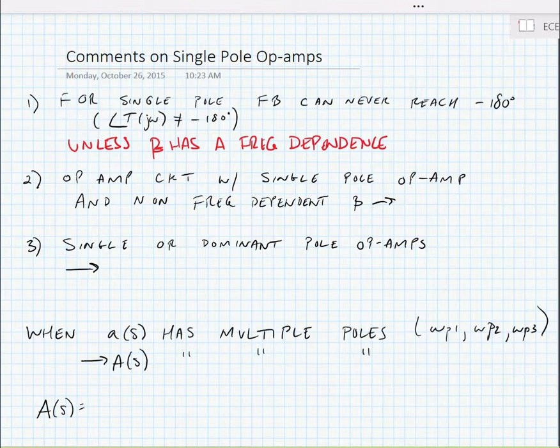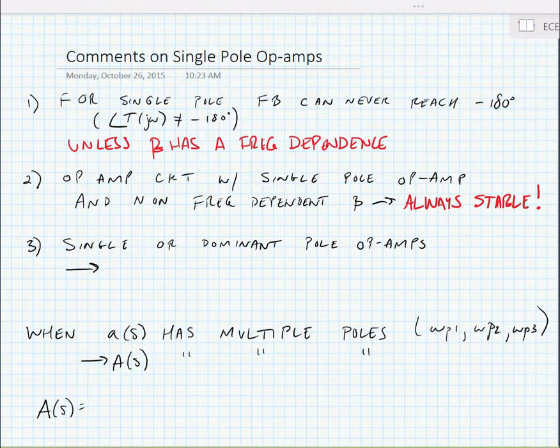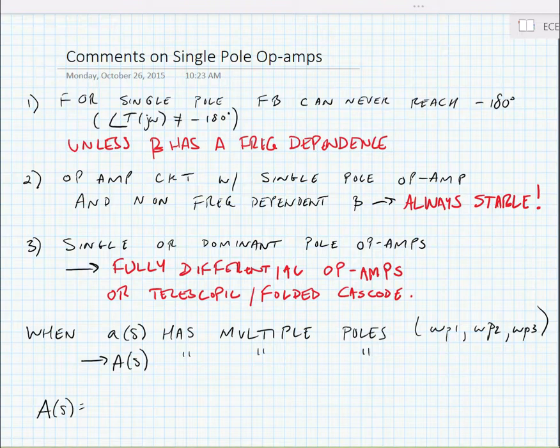Now, the types of op-amps that give us a single or at least a very dominant pole are a fully differential op-amp or our cascade op-amps that we've been looking at. And we showed the other day that when we look at an op-amp loaded with a current mirror, we actually have two poles, one at the mirror node and one at the output node. Those poles are generally far apart, so generally the op-amp will be stable, but that's not always the case.